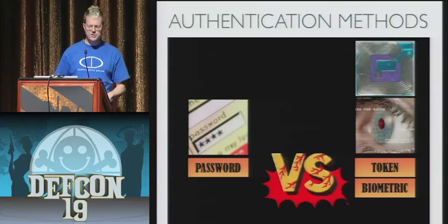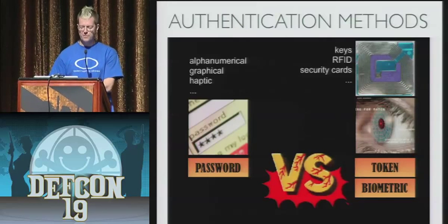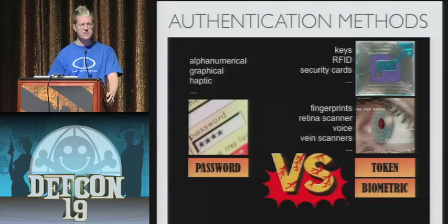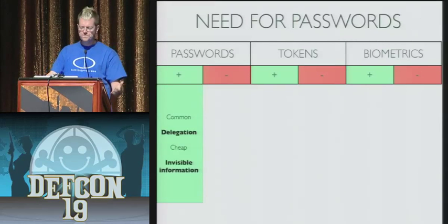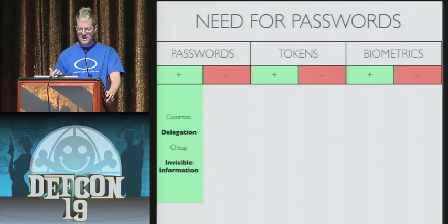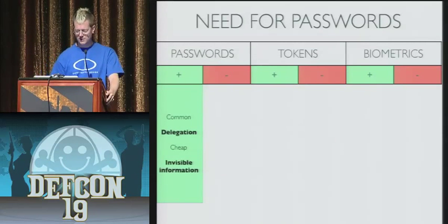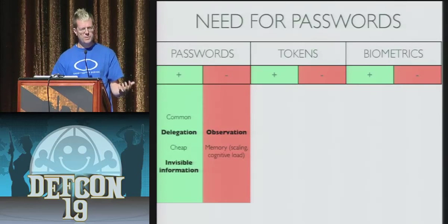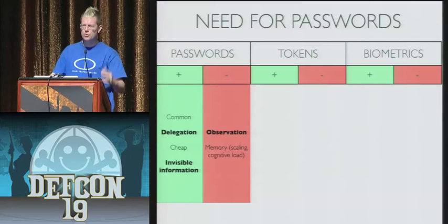Here are some basic authentication methods — what passwords are competing against. A password is something you remember, versus something you have — a key, RFID card, security card — or something that is part of you, a biometric. With passwords, the big advantages are that the information is invisible and it can be delegated — you can give it to someone else, and if someone gets it, you can change it. The big drawbacks are cognitive load and susceptibility to observation: if someone knows what it is, it's already copied.